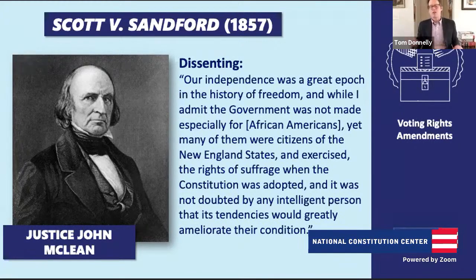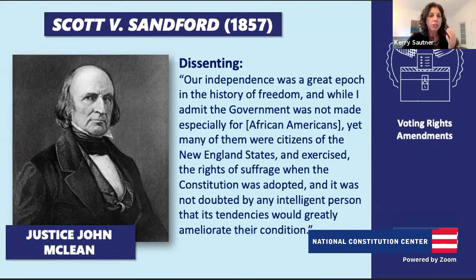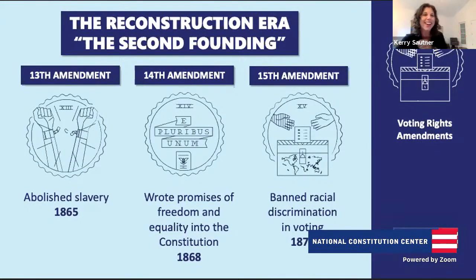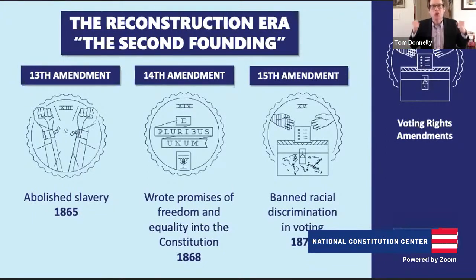Kari: Students, you're seeing people fight for this idea of citizenship and equality, utilizing the vote as a mechanism to be represented. This decision essentially blows up into the Civil War, leading us to the end of the Civil War and the Reconstruction period. Tom Donnelly: This is the period after the Civil War—a bloody war that transformed the Constitution forever with three amendments. The 13th Amendment abolished slavery; the 14th wrote the promises of freedom and equality into the Constitution; and the 15th banned racial discrimination in voting.